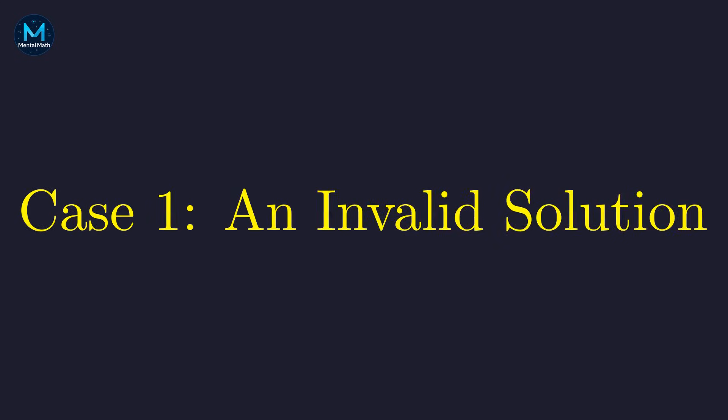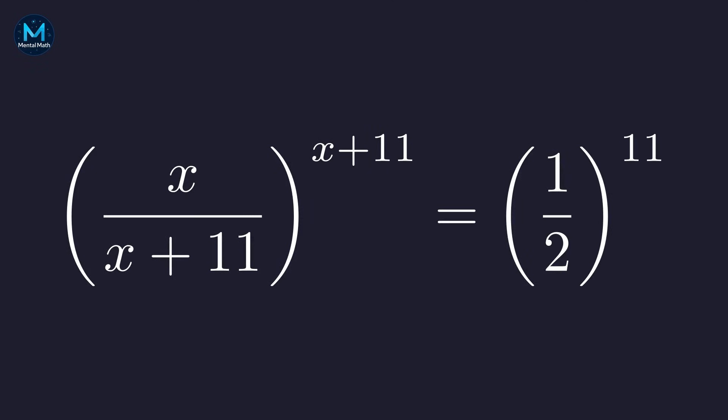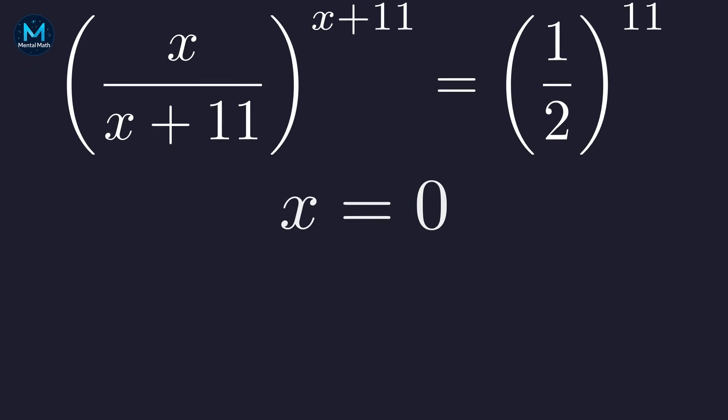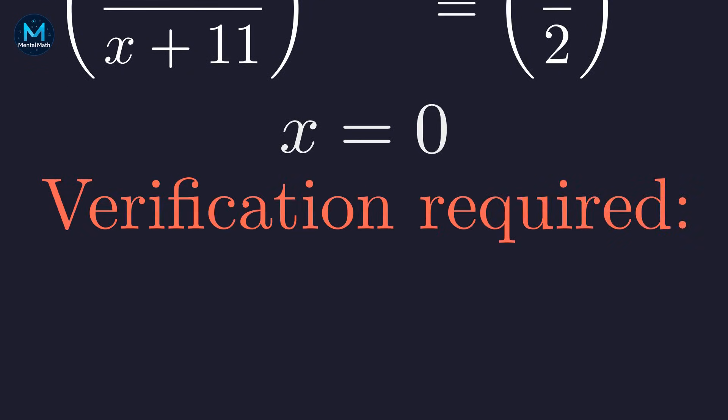Let's test the first form. The structure here doesn't quite match. The exponent on the left is x plus 11, but it's raised to a base involving x. But let's try anyway. What if the exponents match? Setting the exponents equal, x plus 11 equals 11, which means x would be 0. But we need to check if the bases match too.